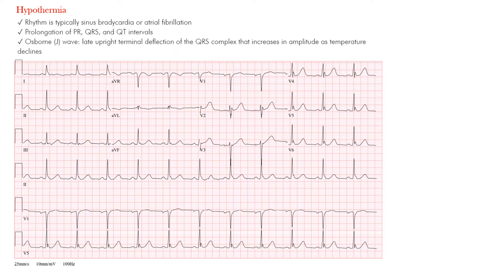The EKG features you tend to see include rhythm abnormalities — things slow down. You may see sinus bradycardia, as well as an atrial arrhythmia such as atrial fibrillation with a slow ventricular response. You may see a slow junctional rhythm and even an AV block. You may also see widening — prolongation of the PR interval, the QRS interval, as well as the QT interval. Because the patient is cold, they may also have muscle tremor artifact due to shivering.